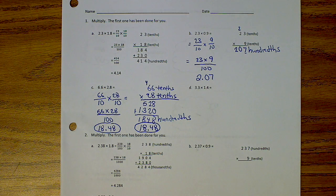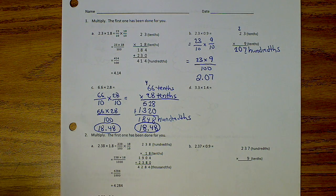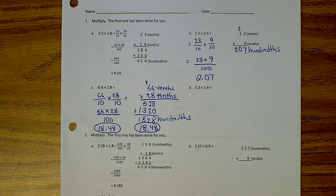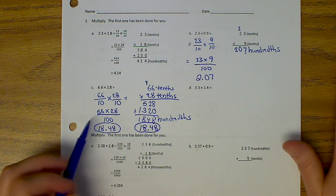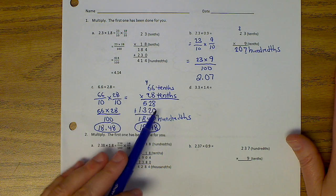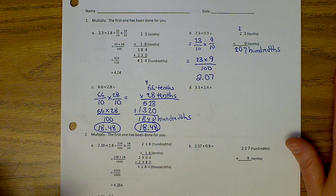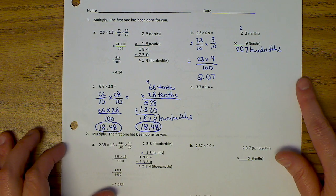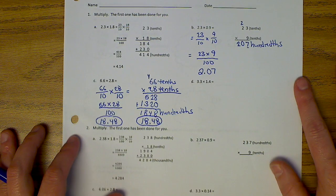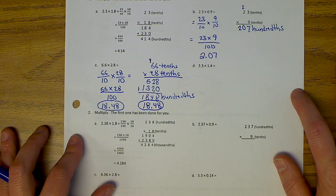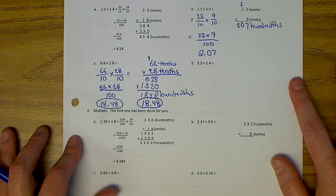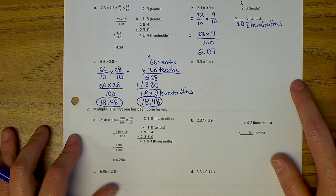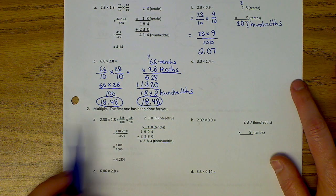So basically today what they're doing is they're just showing you two different ways to solve this. Yesterday they showed you the chart. Today they're showing you this process. They call this Standard Algorithm. I do not call it Standard Algorithm. What do you call it? My Standard Algorithm looks different to me than this. This would be Engage New York's form of Standard Algorithm.